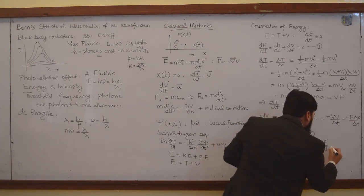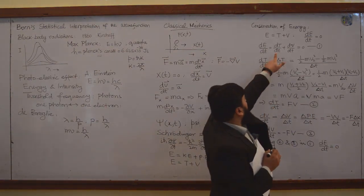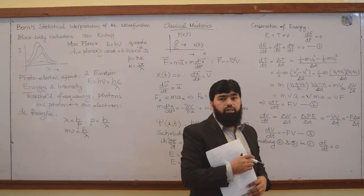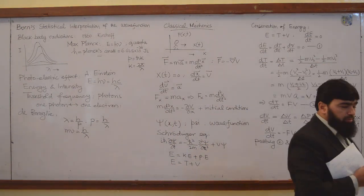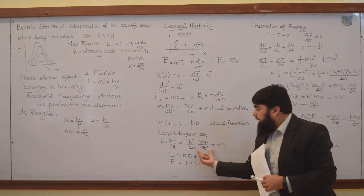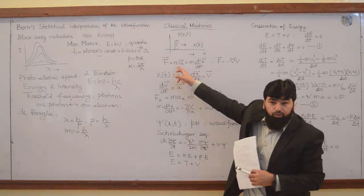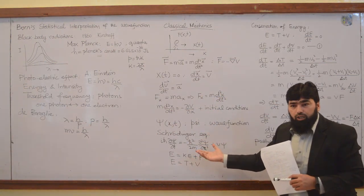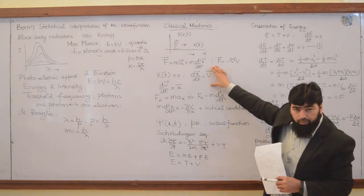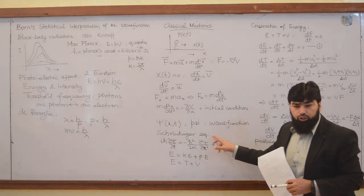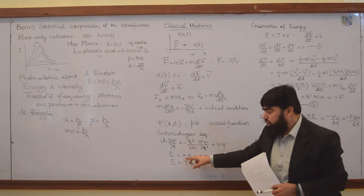Adding equations 2 and 3 into equation 1: dE/dt = F·v + (−F·v) = 0. The two terms cancel, and we confirm that energy remains conserved. This is the law of conservation of energy, and the Schrödinger equation is a representation of this conservation principle — more comprehensive than F = ma, which appears as just one part of it.